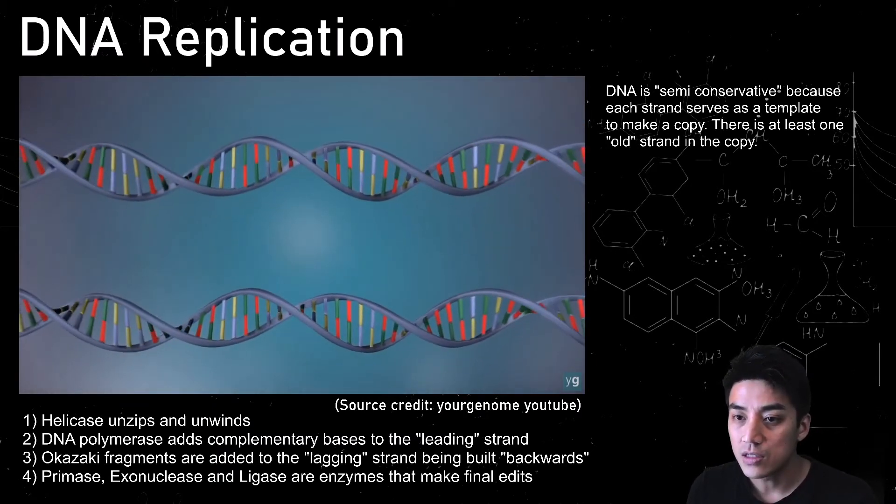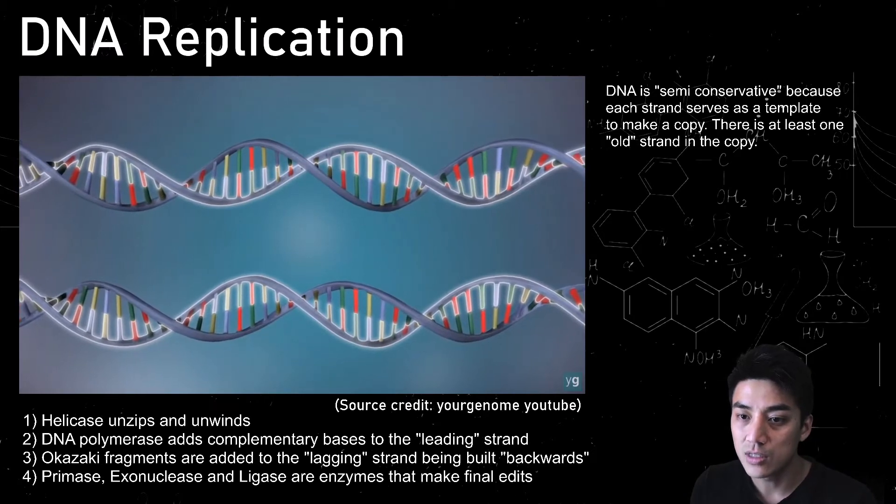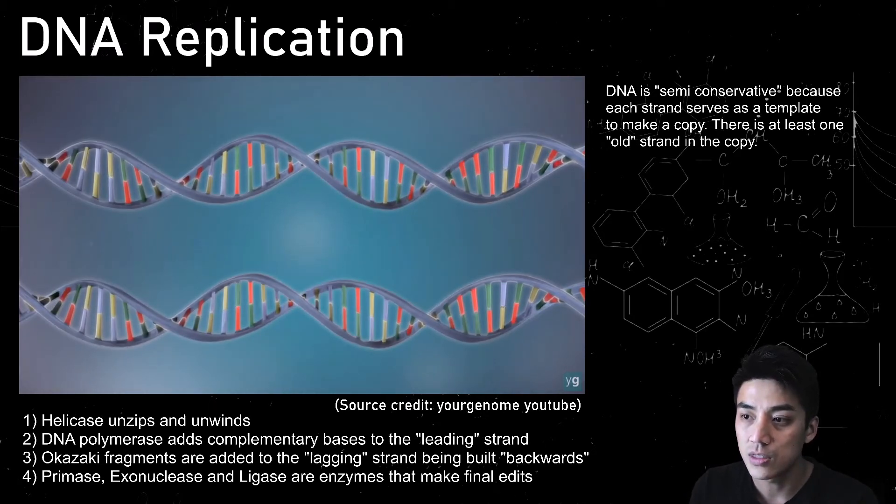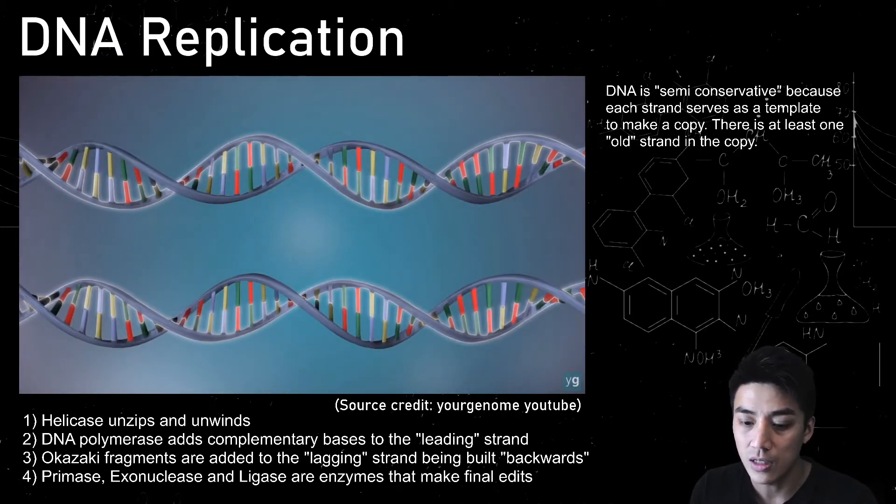So there you have it. You have a double helix structure. And this is known as semi-conservative because there's at least one old strand in the copy.